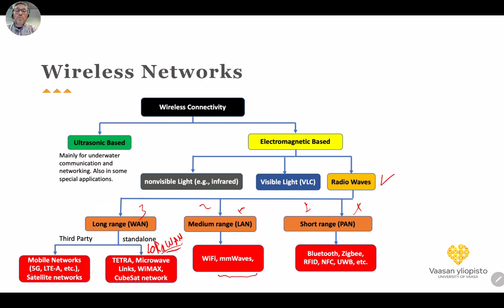This has been a general overview of wireless networks. In this course, we will now start with digital communication, since virtually all wireless technology today is based on digital communication. It is very important to understand what digital communication means, why it replaced analog communication, its limitations and capabilities. This will be the topic of the next part of the course. Thank you very much.